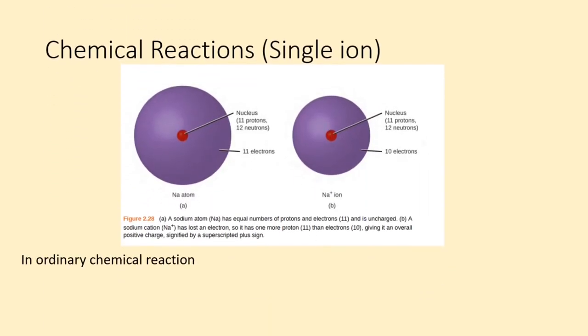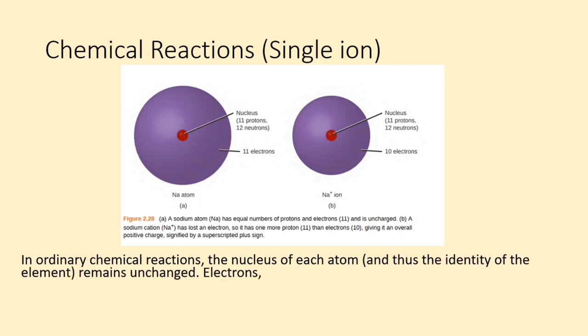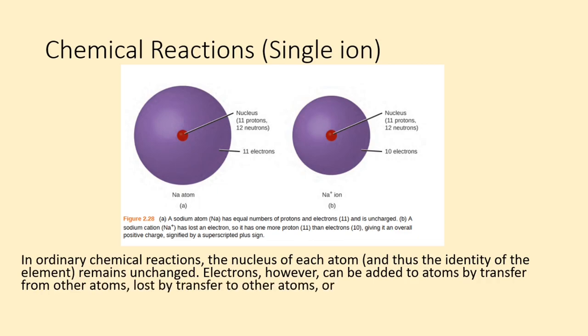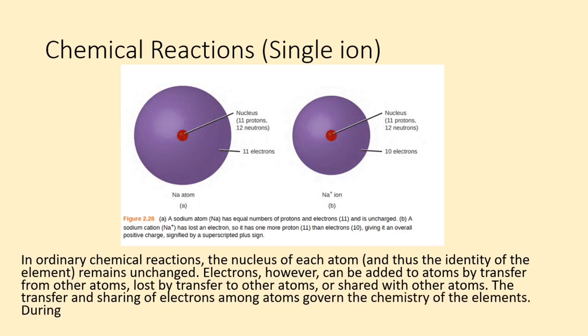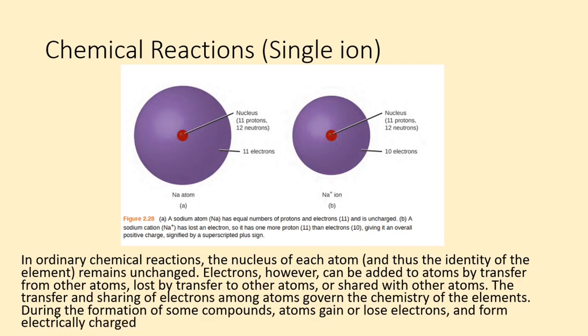In ordinary chemical reactions, the nucleus of each atom, and thus the identity of the element, remains unchanged. Electrons, however, can be added to atoms by transfer from other atoms, lost by transfer to other atoms, or shared with other atoms. The transfer and sharing of electrons among atoms govern the chemistry of the elements. During the formation of some compounds, atoms gain or lose electrons and form electrically charged particles called ions.